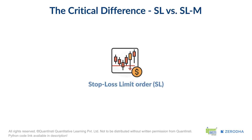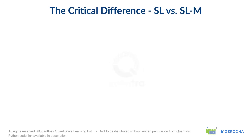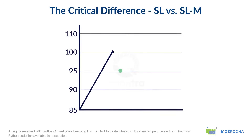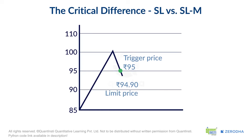Let's talk about the stop loss limit order, or SL. An SL order has two prices. A trigger price — this is the price that wakes up your order. Using our example, the trigger price would be Rs. 95. When the stock hits Rs. 95, your sell order is sent to the exchange. A limit price — this is the minimum price you are willing to accept. You might set this at Rs. 94.90. This means when the stock hits Rs. 95, your sell order is placed, but it will only execute at Rs. 94.90 or a better price, that is, higher.